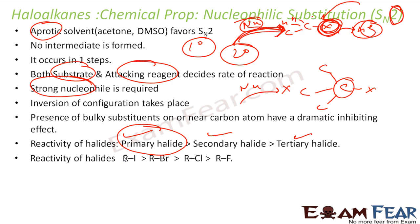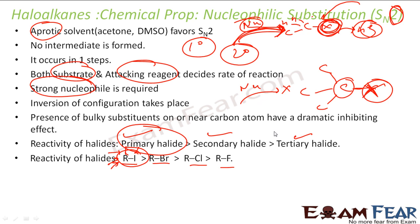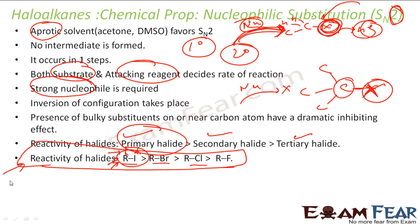The reactivity order of halides as leaving groups is RI > RBr > RCl > RF — the better the leaving group, the better it is. This is actually common to both SN1 and SN2 reactions. If RI is present, it can easily be kicked out even with a weak nucleophile. So the leaving group quality plays a critical role in both reactions; you can use this as a common factor when comparing SN1 and SN2.